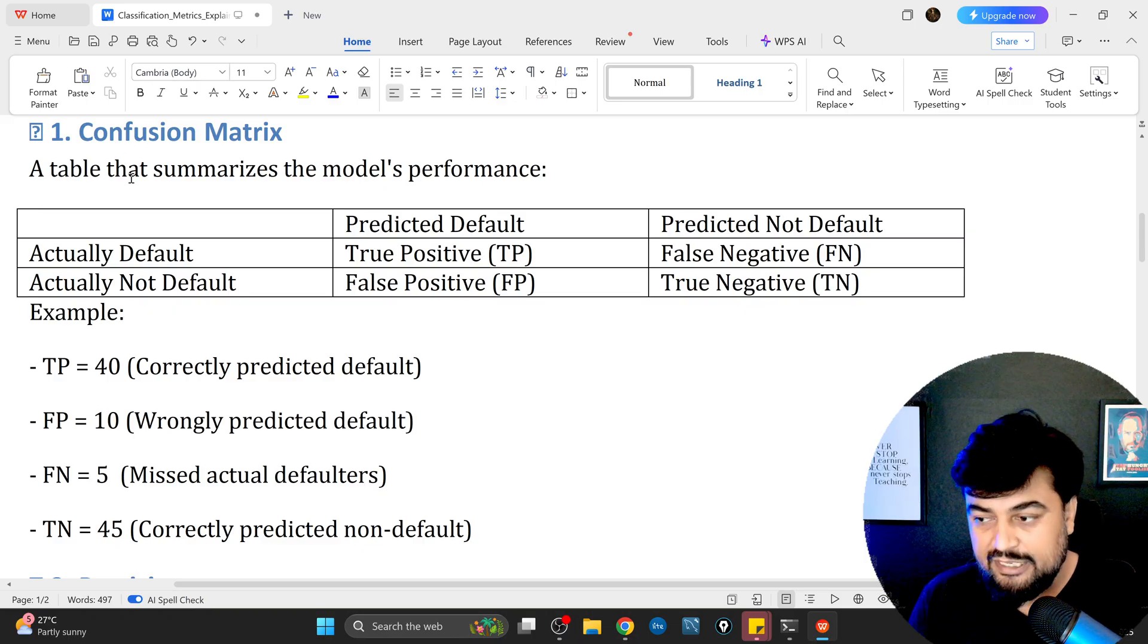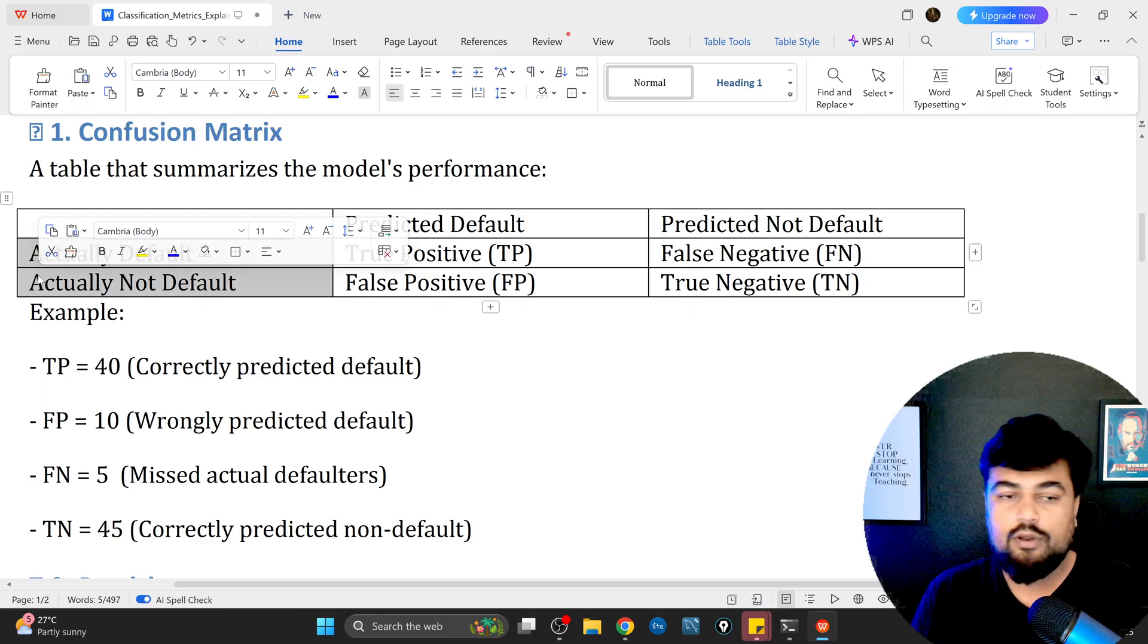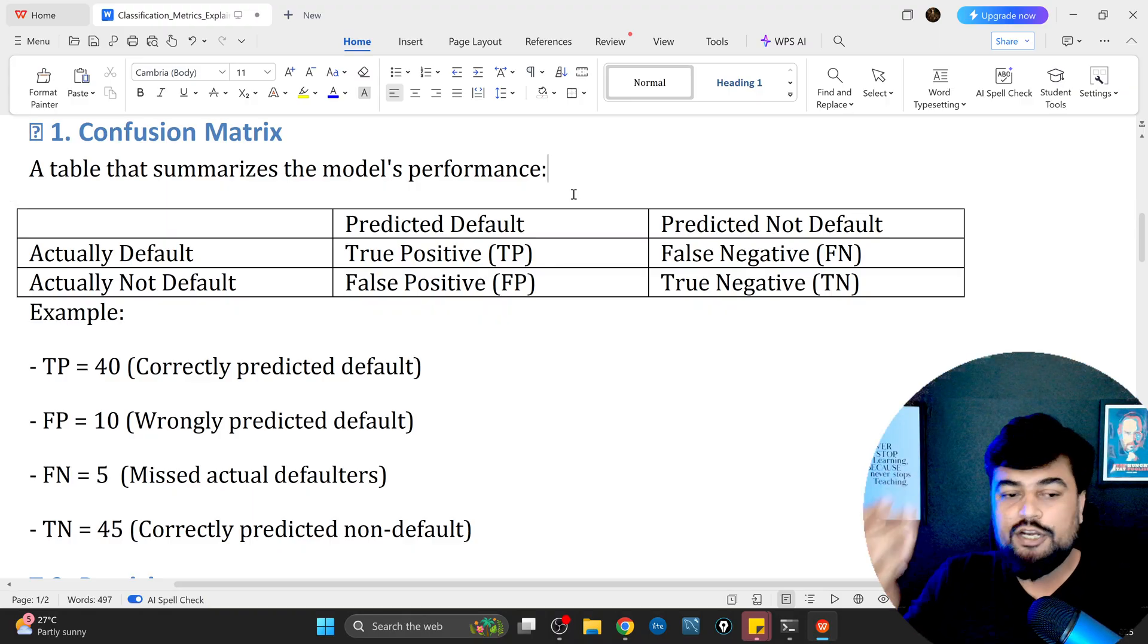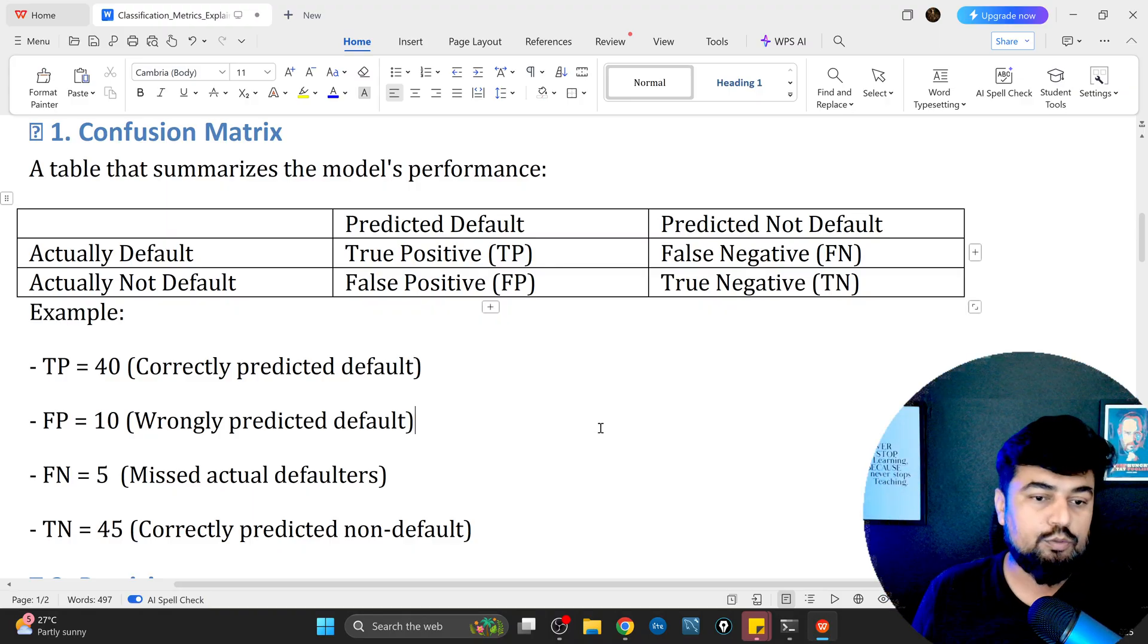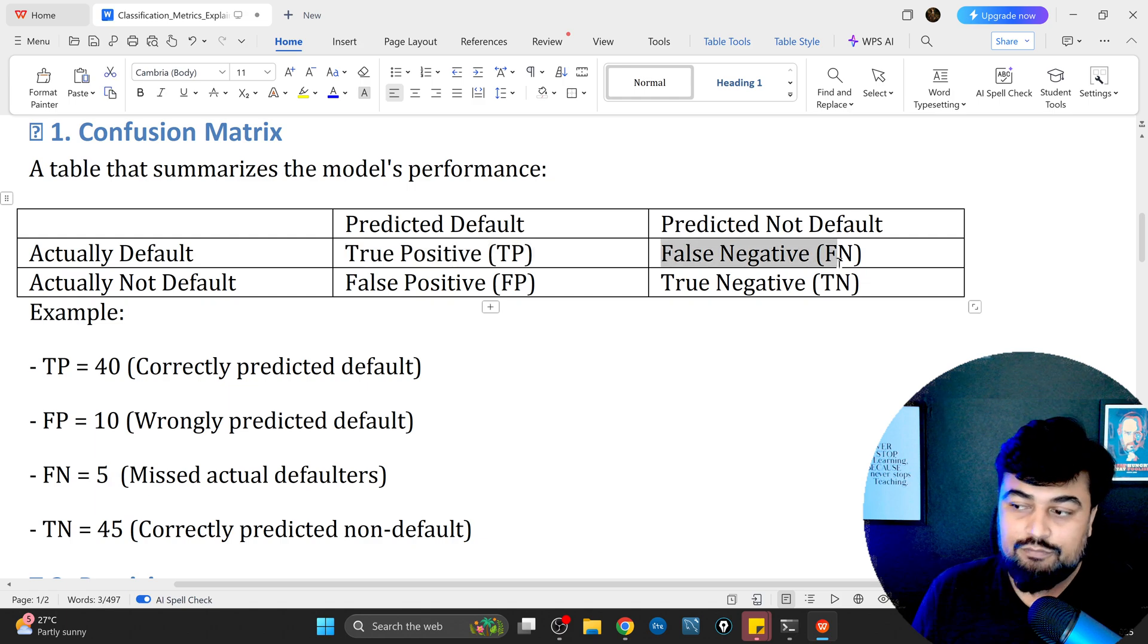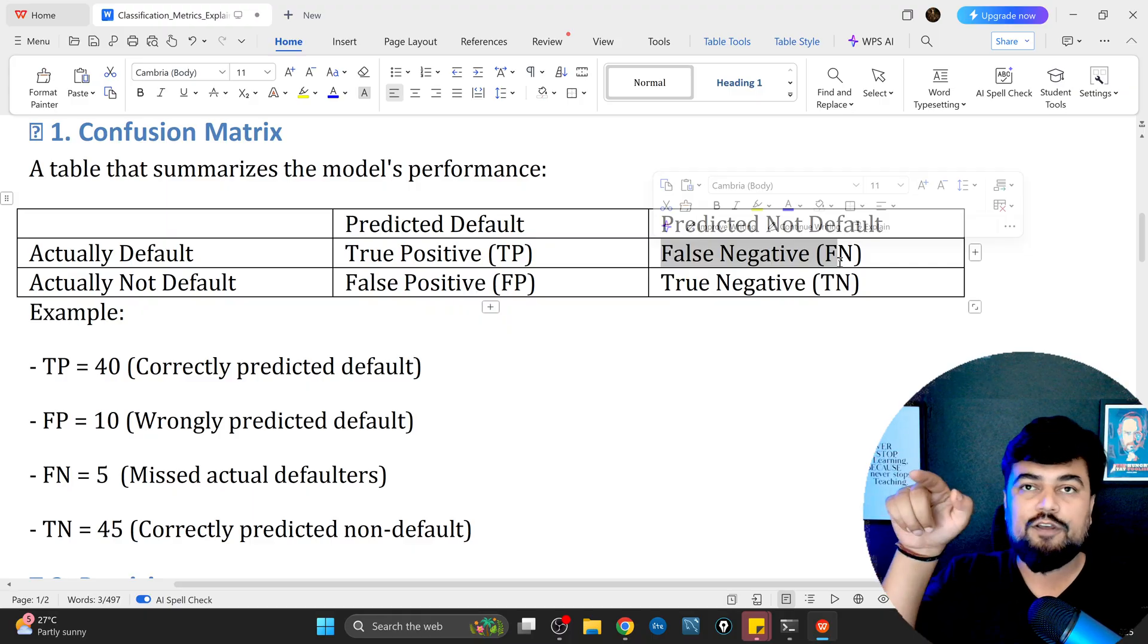What is the confusion matrix? This is a table that summarizes the model performance. There are two things: you have actual values and on the top you have predicted values. In between your prediction and actual, you need to play your game. If you see there is a value called true positive, we call it TP value. Then you have false negative FN. Remember this: TP, FN.